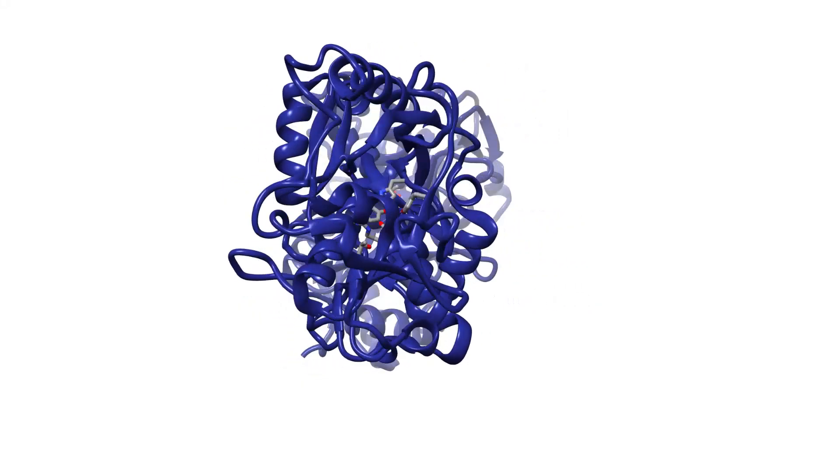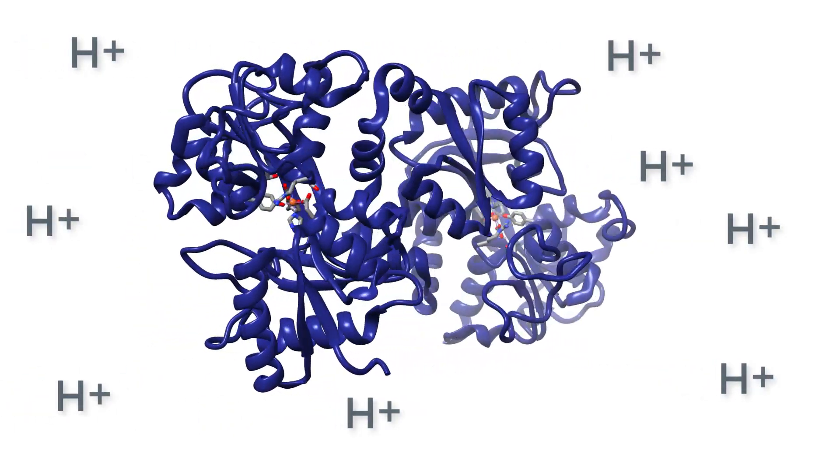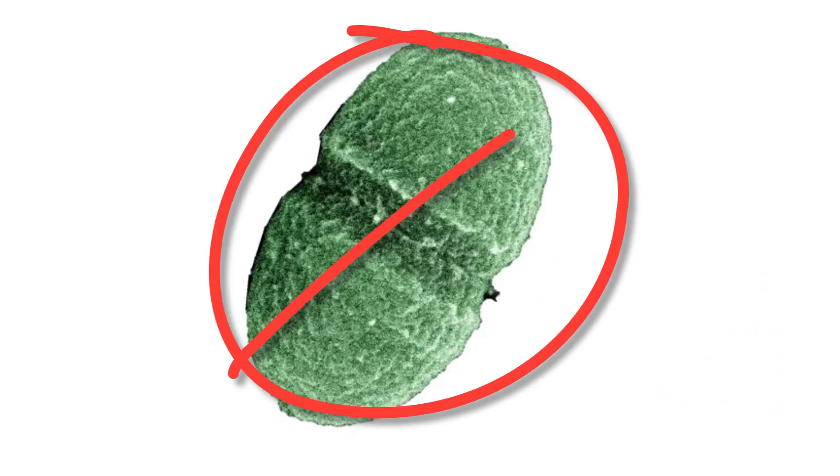Lactoferrin, on the other hand, can bind to iron until pH drops to around 2-3, which is very acidic for the body. Acidity this low can be found in inflammation sites, cellular vesicles, or in the stomach, but not in most bacteria.